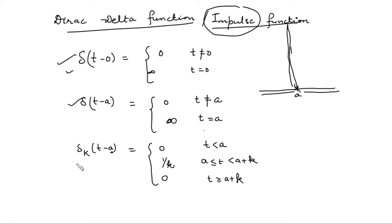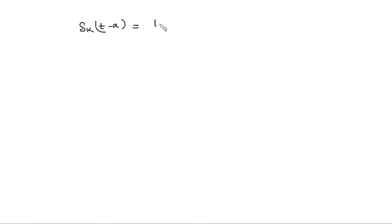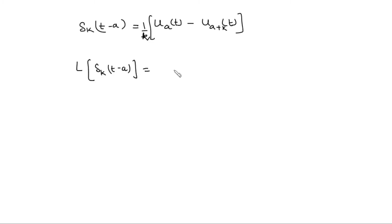We can define this Dirac delta function in terms of delta_k, and when we take k tending to zero we get the Dirac delta function at a. This piecewise continuous function can be expressed in terms of unit steps as: zero times unit step at a, plus one over k times unit step at a, minus unit step at a plus k, plus zero times unit step at a plus k. So the Dirac delta function in terms of k is: unit step at a minus unit step at a plus k, times one over k.